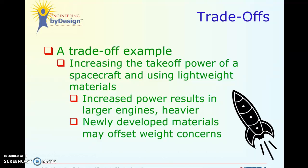Here's a good example: increasing the takeoff power of a spacecraft while using lightweight materials. Our criteria is to increase the takeoff power, and our constraint is using lightweight materials. If we increase power, that usually means a larger engine, which means heavier — and that doesn't follow our constraints. So we look for compromises: are there newly developed materials that could offset weight concerns? Trade-offs often lead into your research for criteria and constraints; in order to accomplish both, it gets a little bit trickier. And that is the end of our presentation.